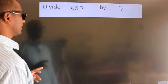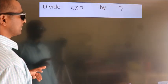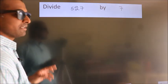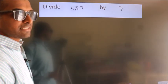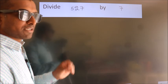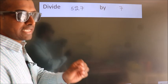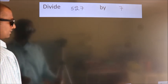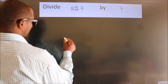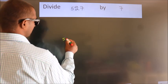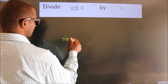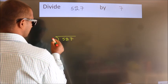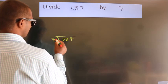Divide 527 by 7. To do this division, we should frame it in this way: 527 here, 7 here.